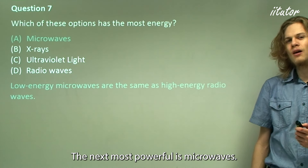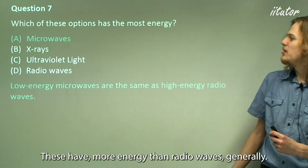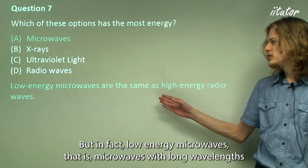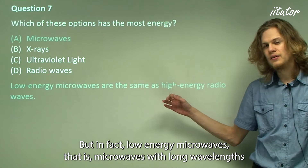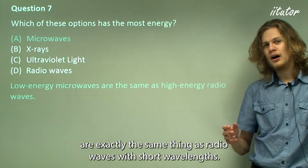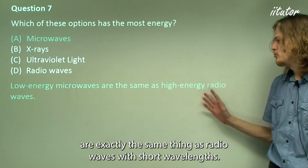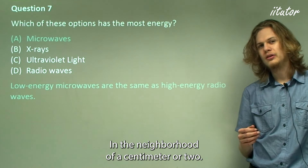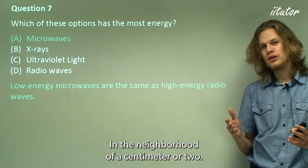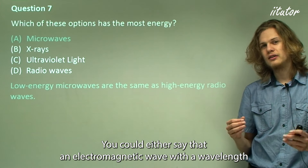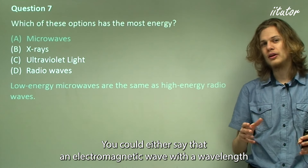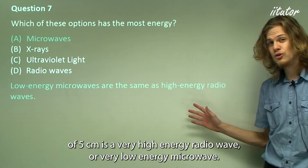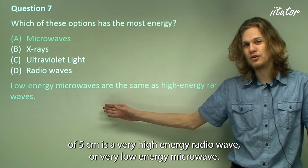The next most powerful is microwaves, which have more energy than radio waves generally. Low-energy microwaves with long wavelengths are essentially the same as high-energy radio waves with short wavelengths. For example, an electromagnetic wave with a wavelength of five centimeters could be called either a very high-energy radio wave or a very low-energy microwave.